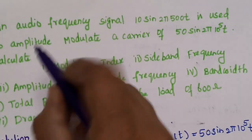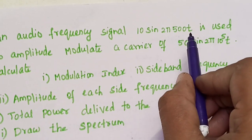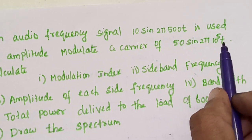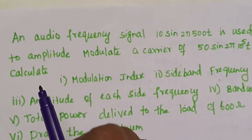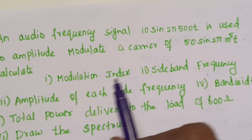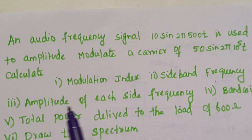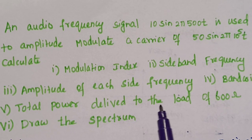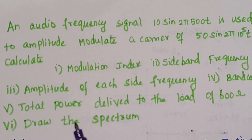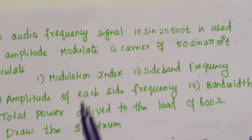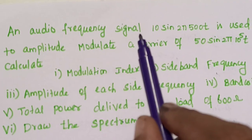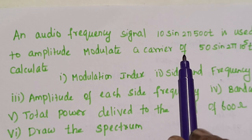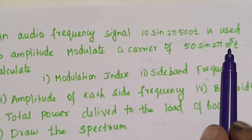An audio frequency signal 10 sin(2π·500t) is used to amplitude modulate a carrier of 50 sin(2π·10⁵t). We are supposed to calculate modulation index, sideband frequency, amplitude of each side frequency, bandwidth, total power delivered to a load of 600 ohms, and finally we have to draw the spectrum. The audio frequency signal is 10 sin(2π·500t) and the carrier signal is 50 sin(2π·10⁵t).